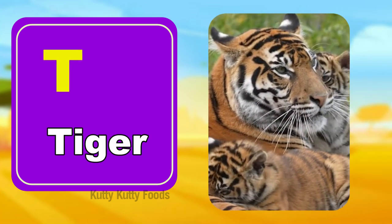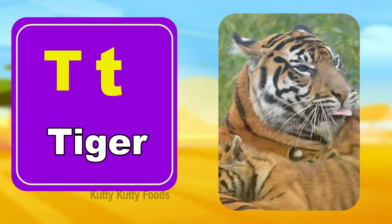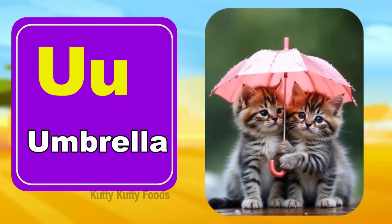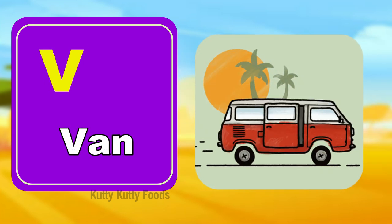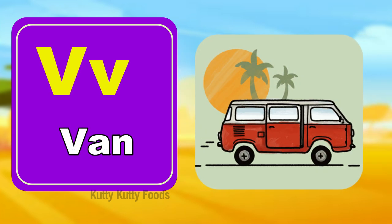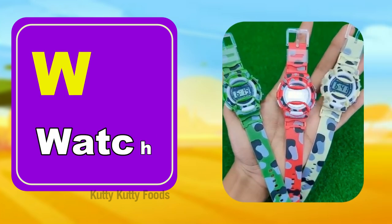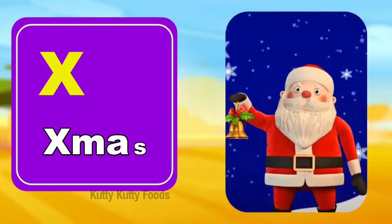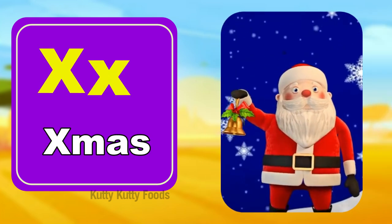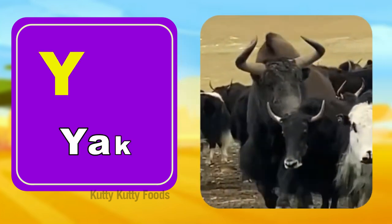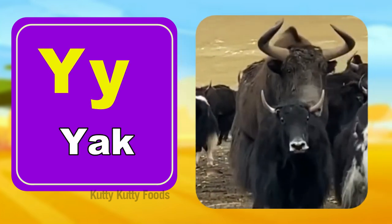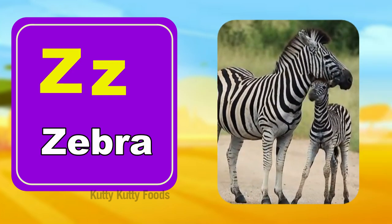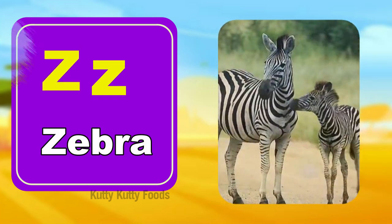T for Tiger, U for Umbrella, V for Van, W for Watch, X for Xmas, Y for Yak, Z for Zebra.